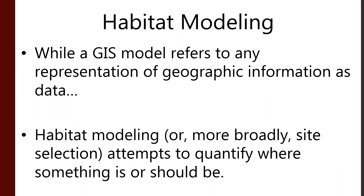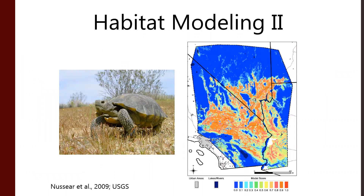Habitat modeling attempts to quantify where an animal, plant, or something is, should be, will be, or won't be under, say, climate change. There's the desert tortoise — it lives in the American Southwest: California, Arizona, Nevada, Utah. As you can see in this paper cited here, and in that map, we've got some kind of model trying to understand where the tortoise would like to be. We have a model score running from zero to one: one meaning more likely tortoise, zero meaning less likely — or perhaps no tortoise at all.